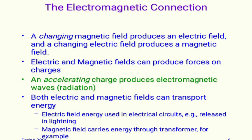Second, electric and magnetic fields can produce force on charges. Third, an accelerating charge produces electromagnetic waves — that is, radiation. Fourth, both electric and magnetic fields can transport energy — electric field energy is used in electrical circuits, for example, released in lightning, and magnetic field energy is carried through transformers.